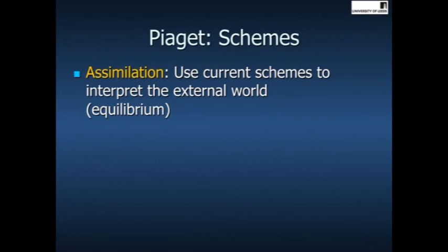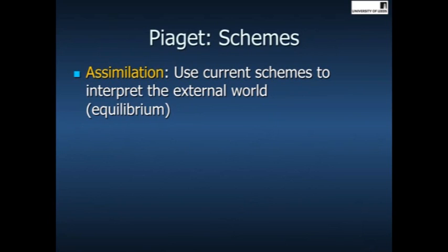So what about these schemes? Piaget believed that they developed through two key processes: assimilation and accommodation. Assimilation was when children use their current schemes to incorporate information that they encounter in the world. So if a child discovers a new object and that object is sufficiently similar to objects that they've already encountered, then they can include the information about that object into their existing schemes. This means that the child's schemes are in a state of equilibrium — the information encountered is sufficiently similar that they can incorporate it into what they already know.